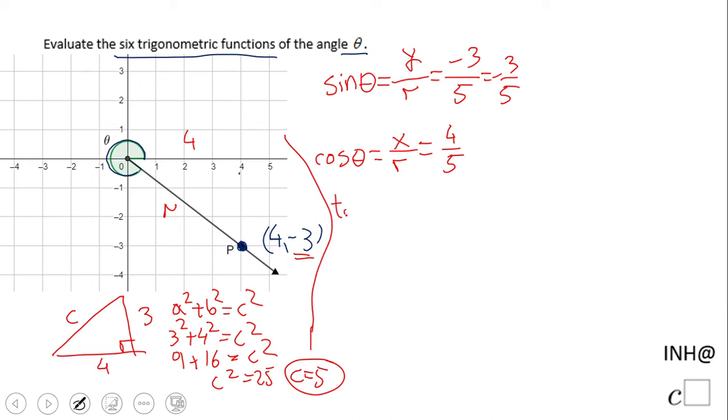Tangent is Y over X. So in this case, we're going to have negative 3 over 4.